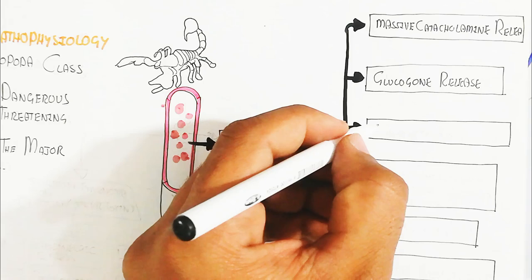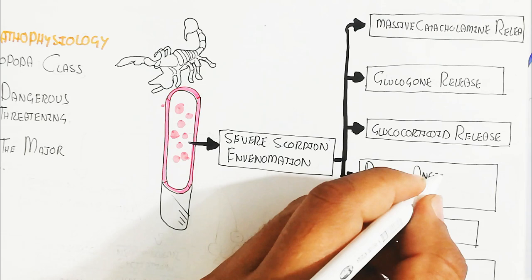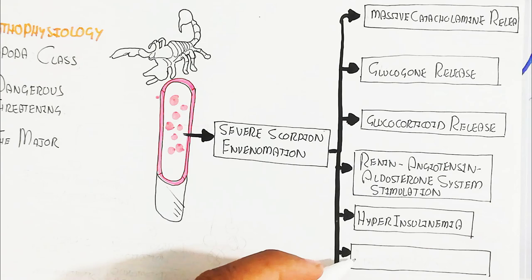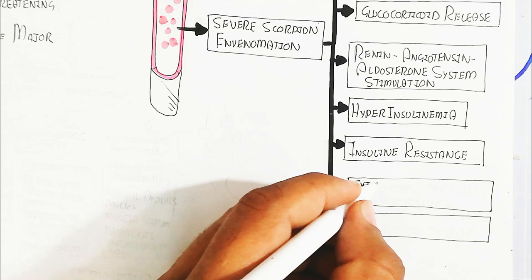In severe scorpion envenomation, there is massive catecholamine release, glucagon release, glucocorticoid release, renin-angiotensin-aldosterone system stimulation, hyperinsulinemia, and insulin resistance. Cytokines such as TNF-alpha, IL-1 beta, IL-6, and IL-8 are released. Development of multi-organ failure will lead to death.